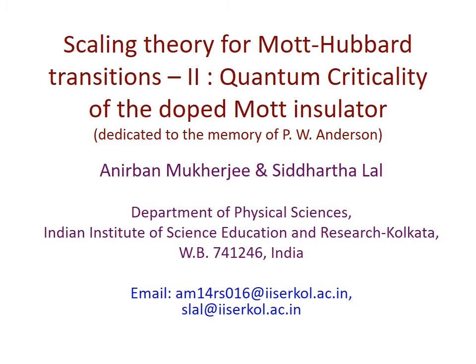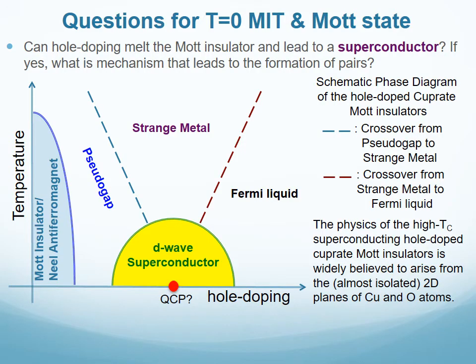In a companion work, we apply the renormalization group method we have developed to the problem of the doped Mott insulator. Here too, there are several important and interesting questions that open up. These are related to the well-known phenomenology of the high-temperature superconducting hole-doped Mott insulators, whose physics is believed to arise from almost isolated two-dimensional planes of copper and oxygen atoms. The schematic temperature vs. hole-doping phase diagram of the cuprates shows a wealth of novel phases, some of which remain to be well understood.